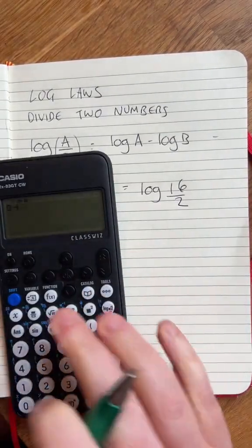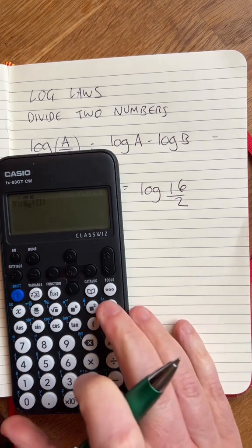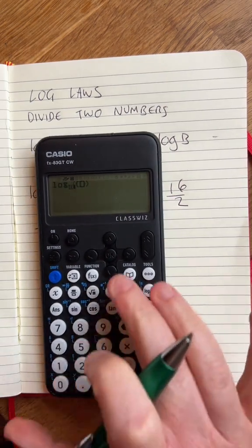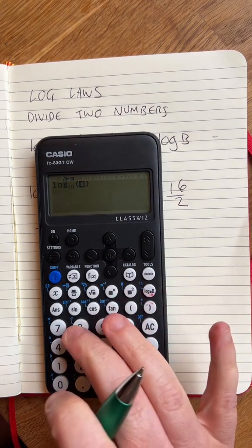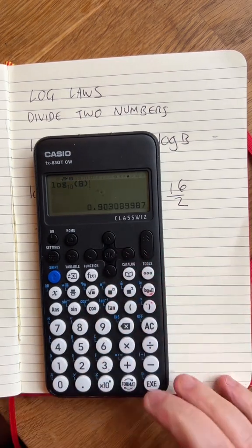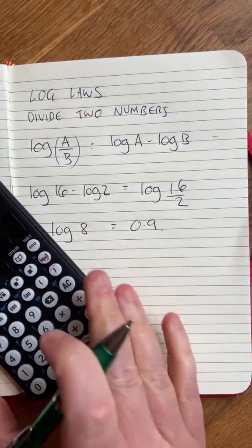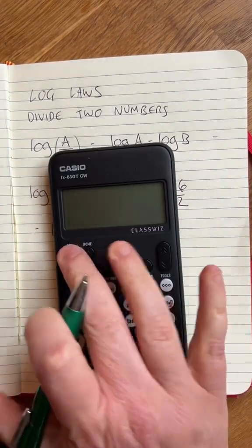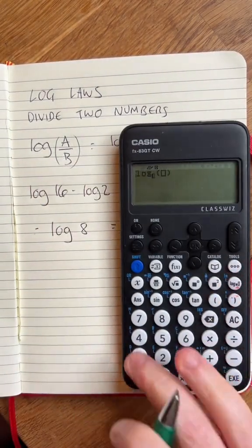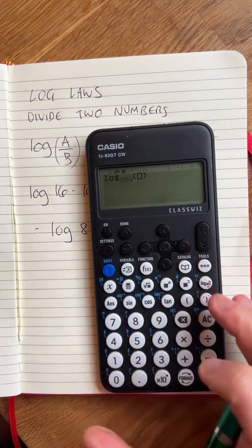If you want that as a number, with this calculator you're going to go there. It's log base 10, so we'll do 10 there. I'm going to put 8. That gives me 0.9. It's the same as log 16, sorry.